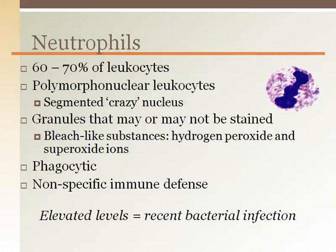Neutrophils are also called polymorphonuclear leukocytes, with an elongated, irregular, segmented nucleus. They are the most numerous white blood cells on a prepared blood slide, making up 60-70% of white blood cells. These cells are phagocytic — they consume antigens and are part of the nonspecific immune defense. Elevated levels are often associated with a relatively recent bacterial infection, such as acute appendicitis.